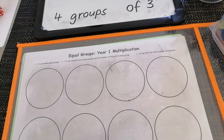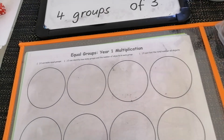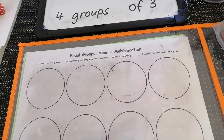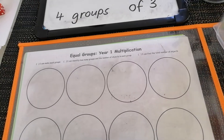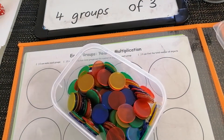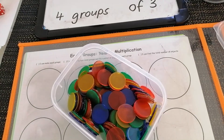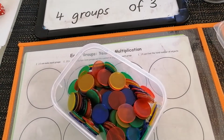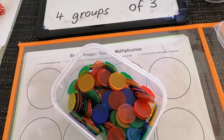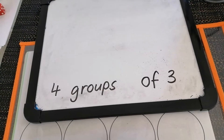Hi boys and girls, today I'll be showing you how to make equal groups on our equal groups mat. I am going to use counters today. You might choose to use counters or blocks. You will need your sheet in your write-and-wipe sleeve, and you will need a whiteboard marker for this activity. Let's get started.